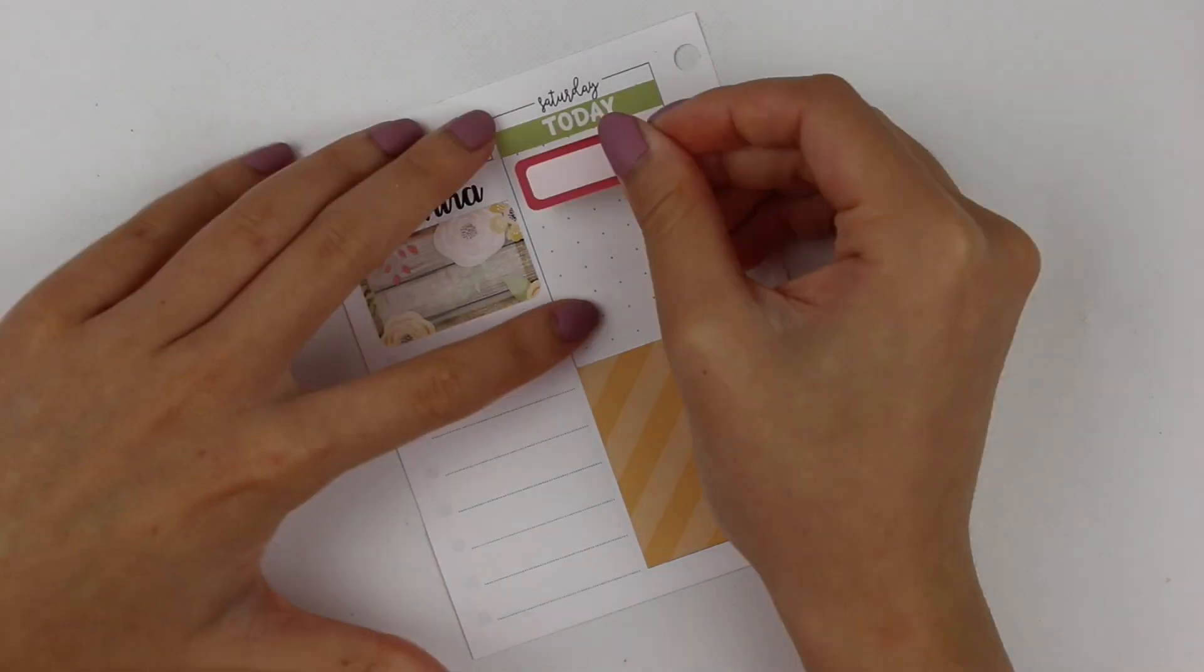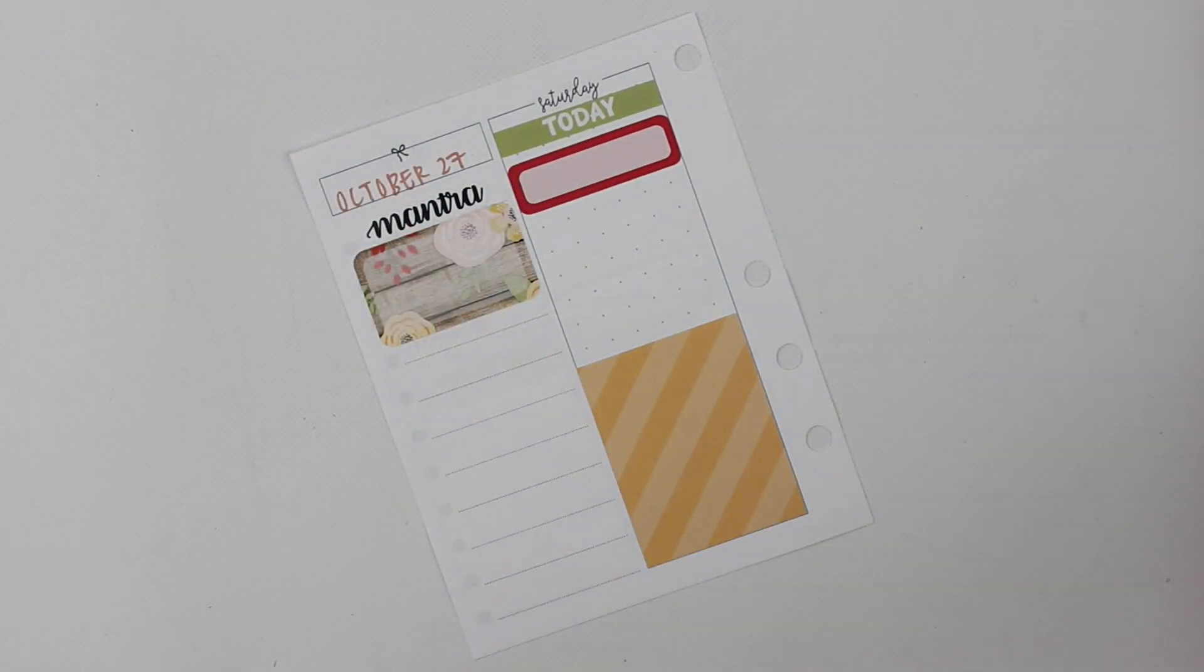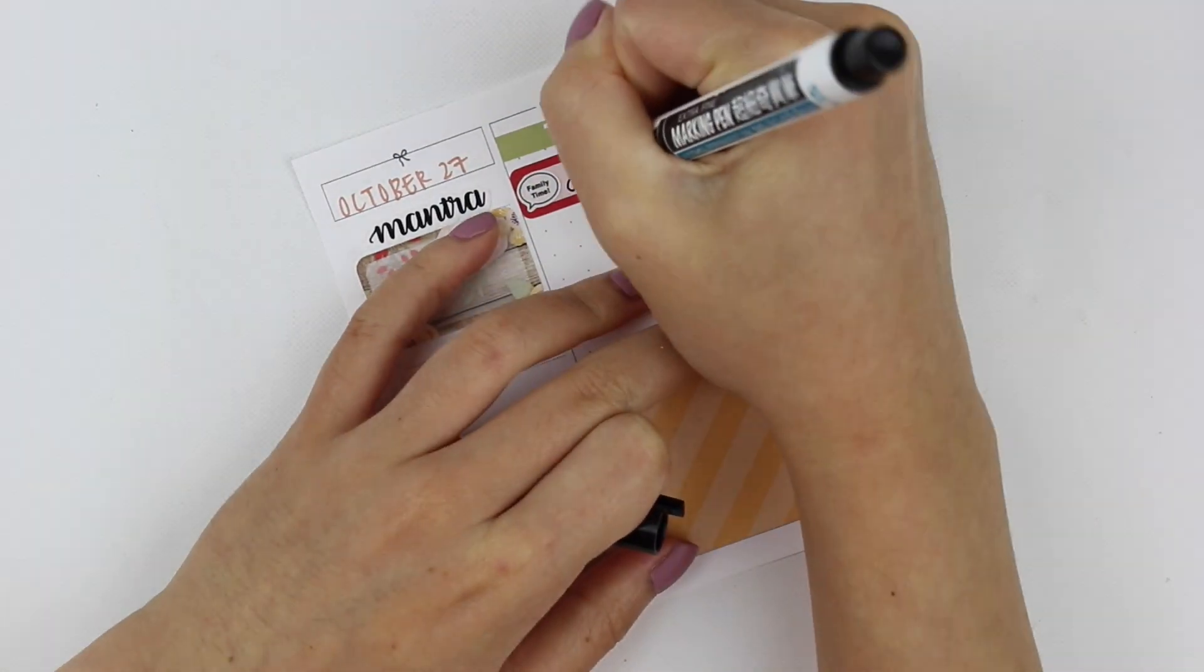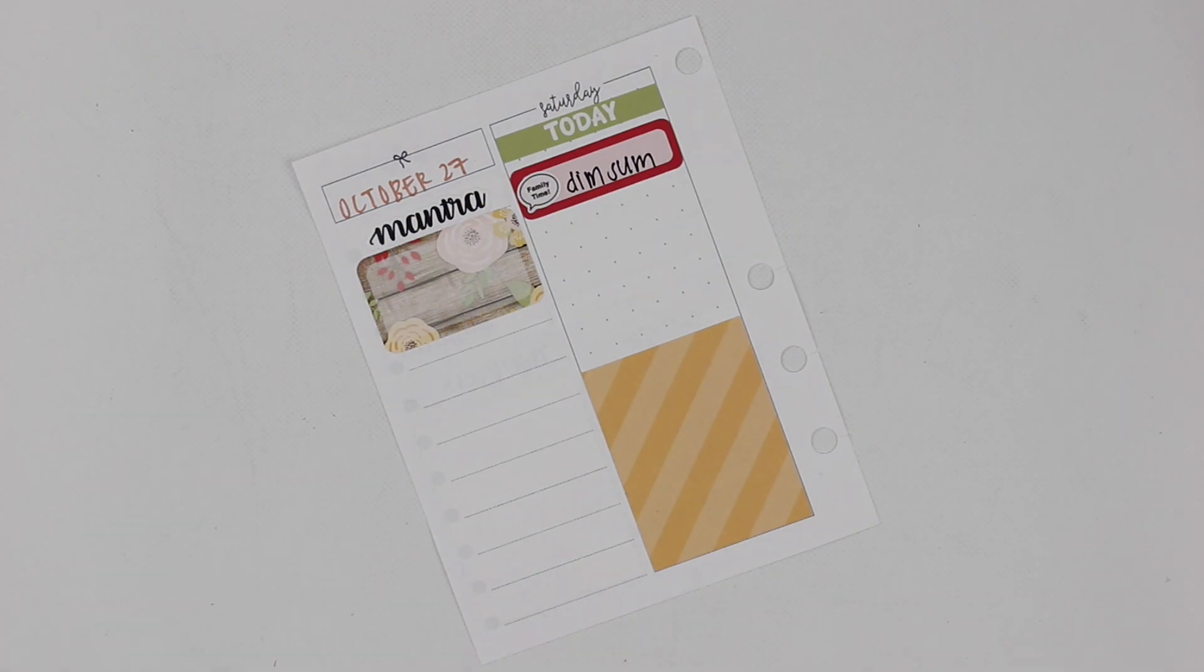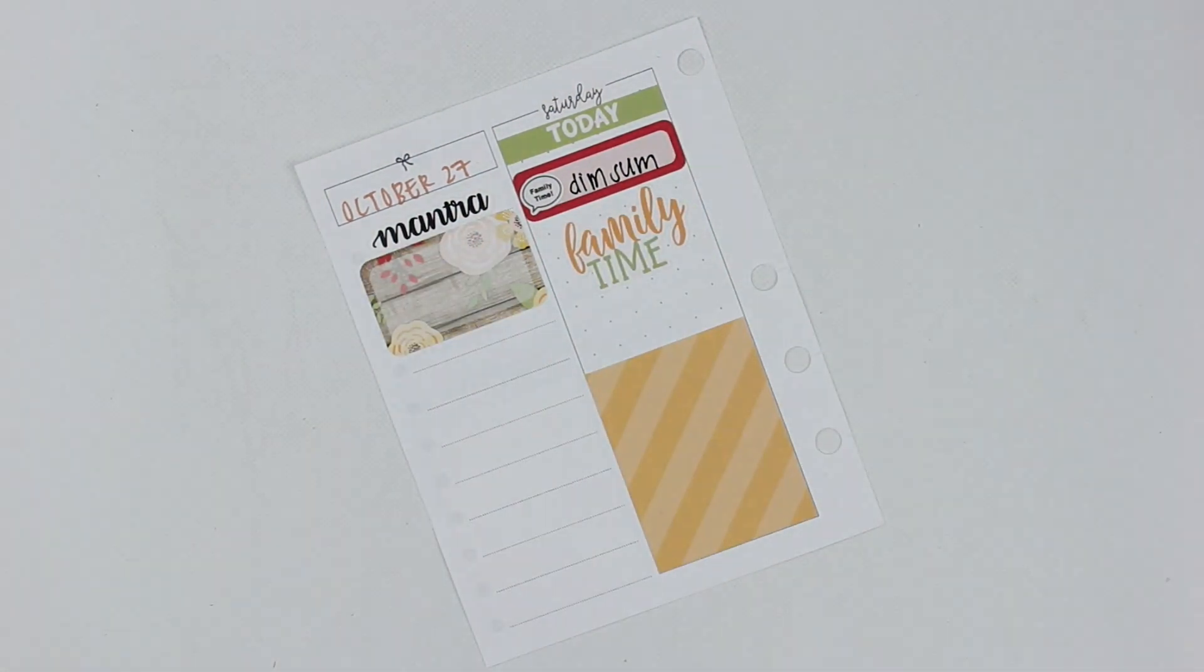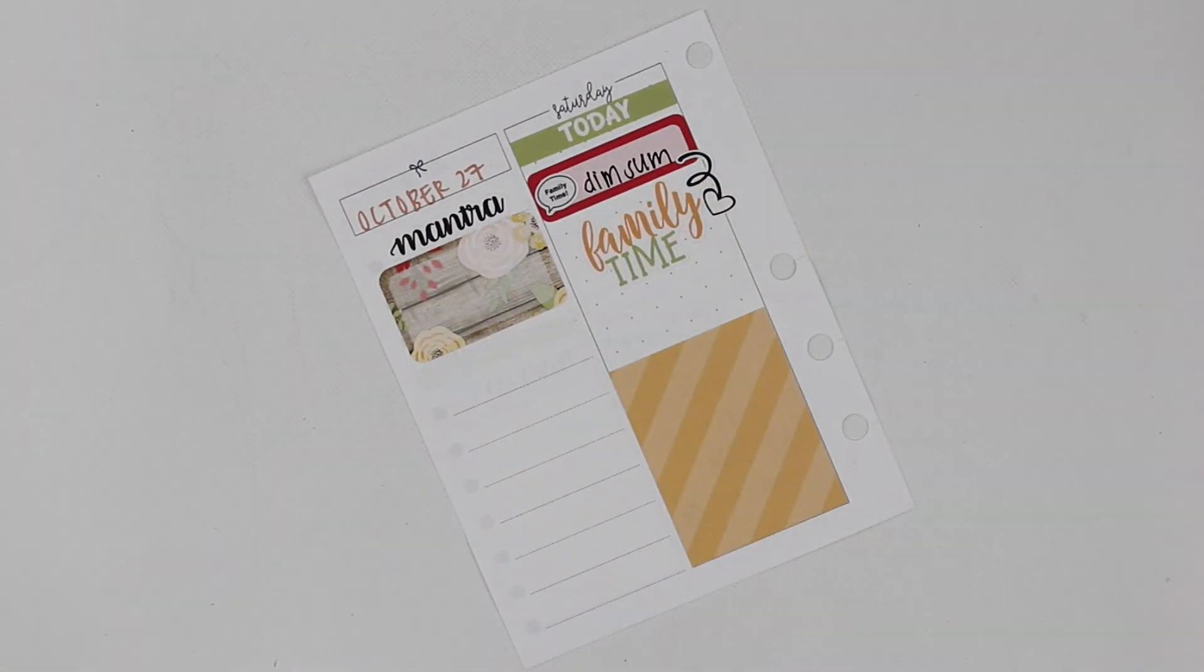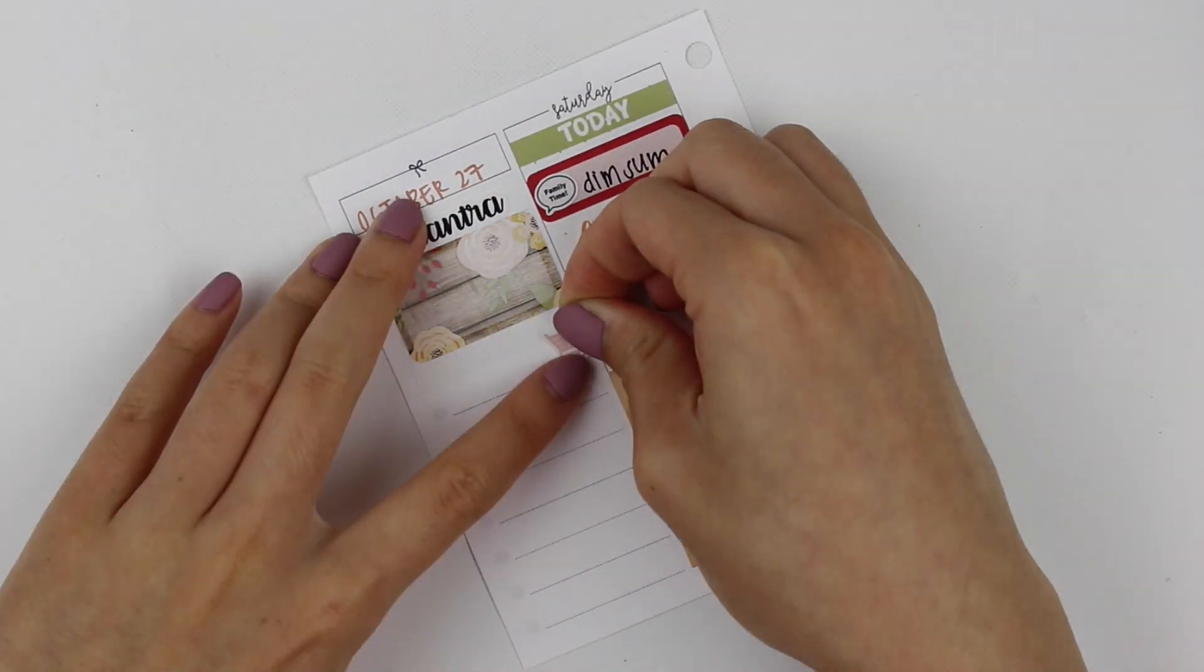On to Saturday, we had family dim sum since my brother was home for the weekend. This family time sticker I adore and it came with the kit. I also put a little heart arrow to point to it. Then I'm filling out the checklist on the side here.